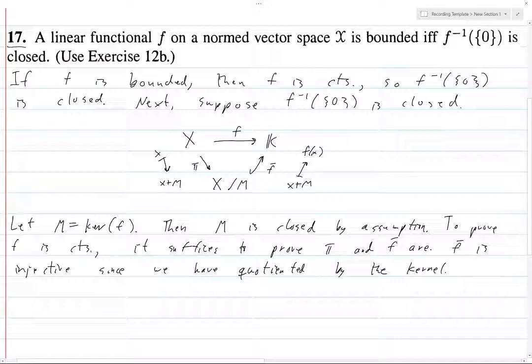Under f bar, all of those things, it's just one coset. The kernel of this map is just the 0 coset. We know that if the kernel of a map is just the 0 element, then it's injective.